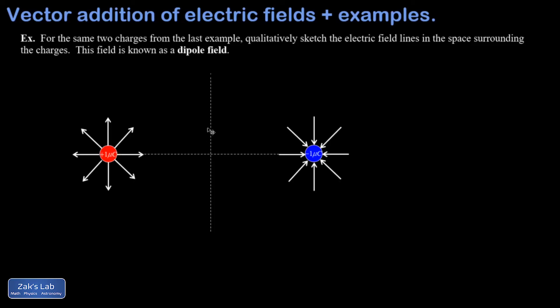And we saw a quantitative illustration of that in the last example. So I know that as these field lines cross the midline, they're going to be horizontal. In other words, the electric field vector is horizontal there. So here's what that looks like.